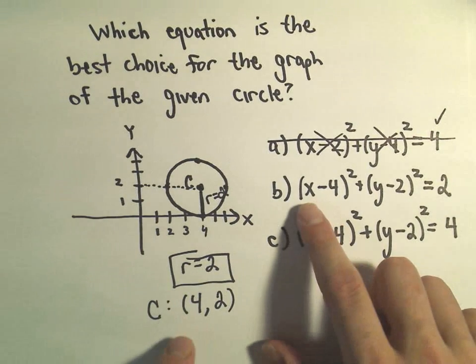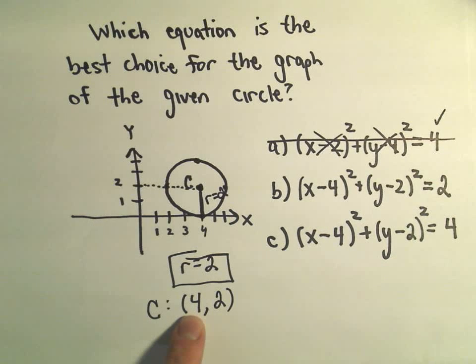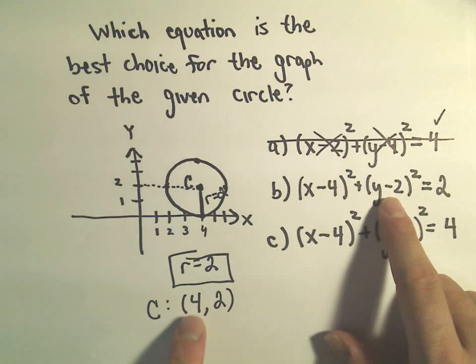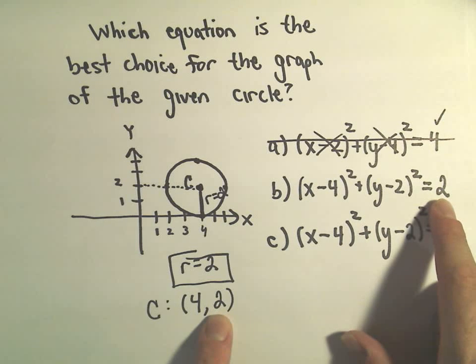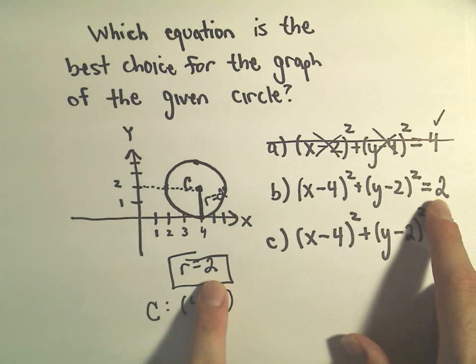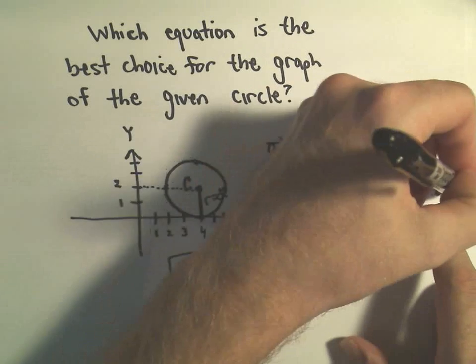The second one, we would have x-4, which is the x coordinate. That's correct. y-2, that's correct, equals 2. Well, the radius is 2, but again, we have to square this. So that's not correct either.